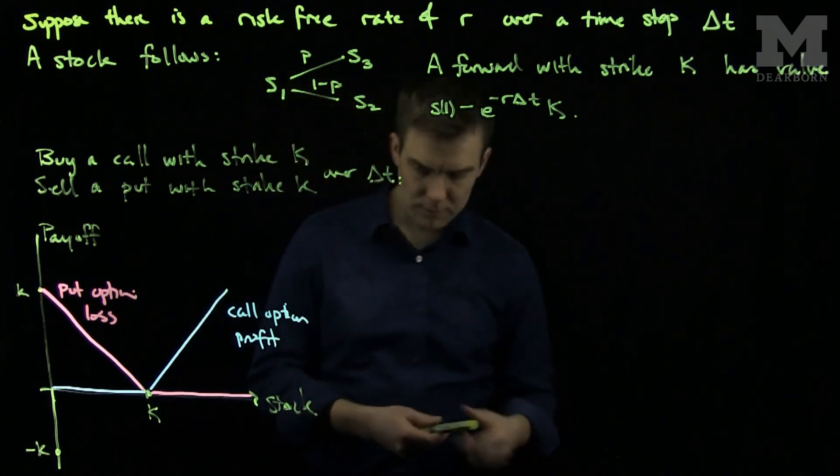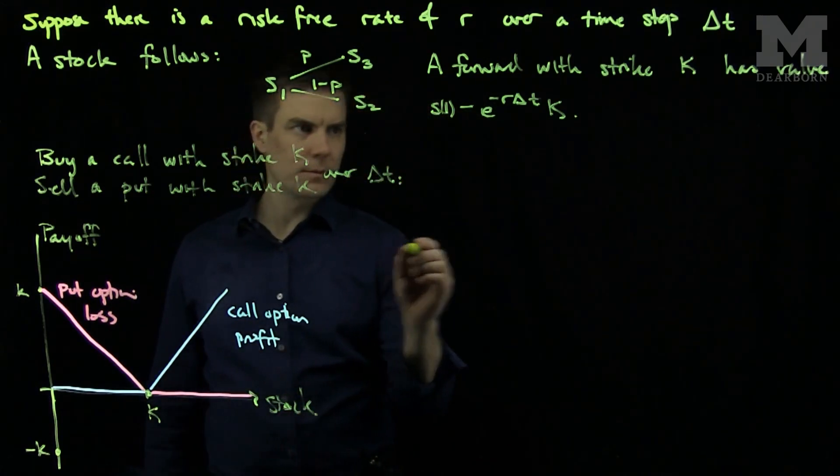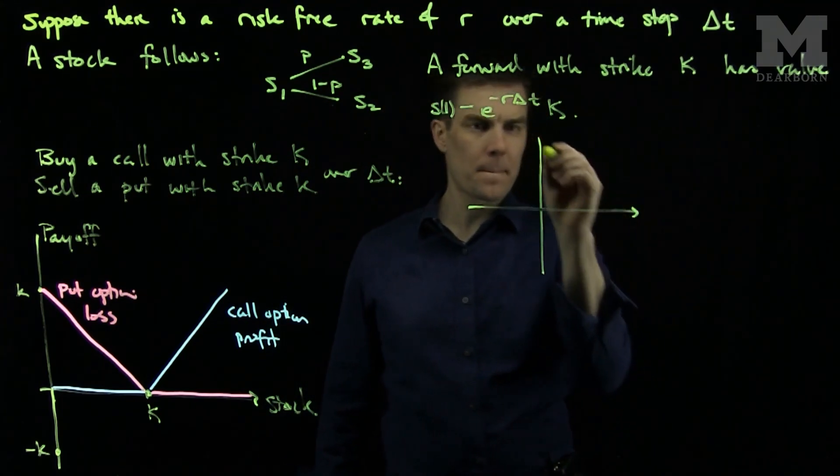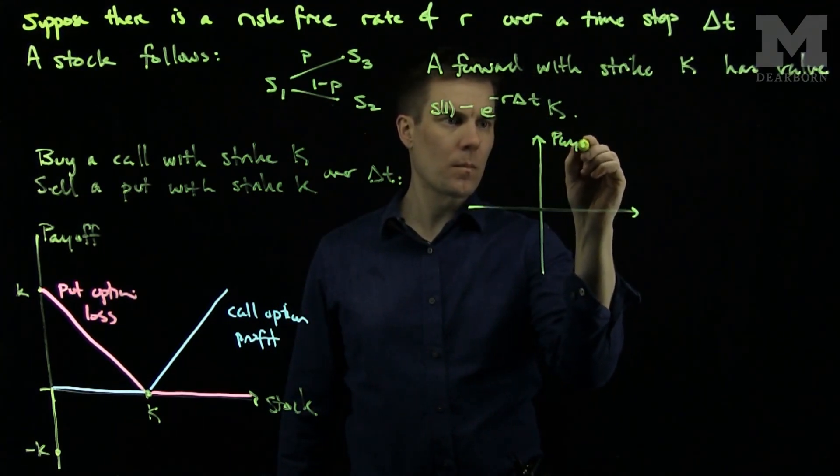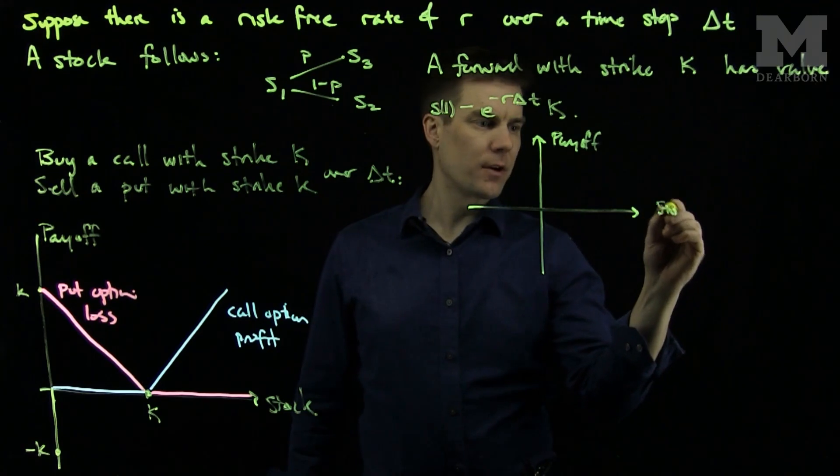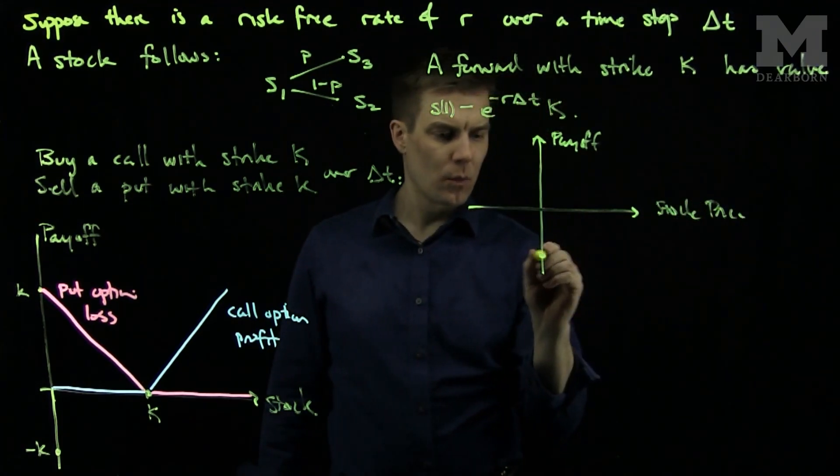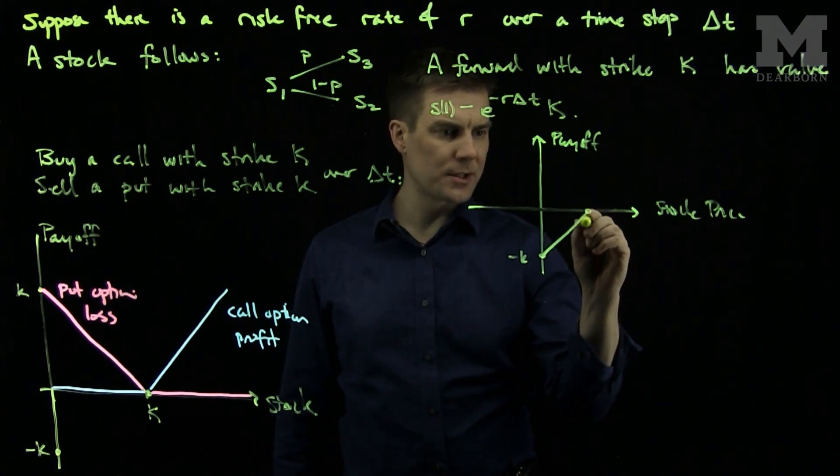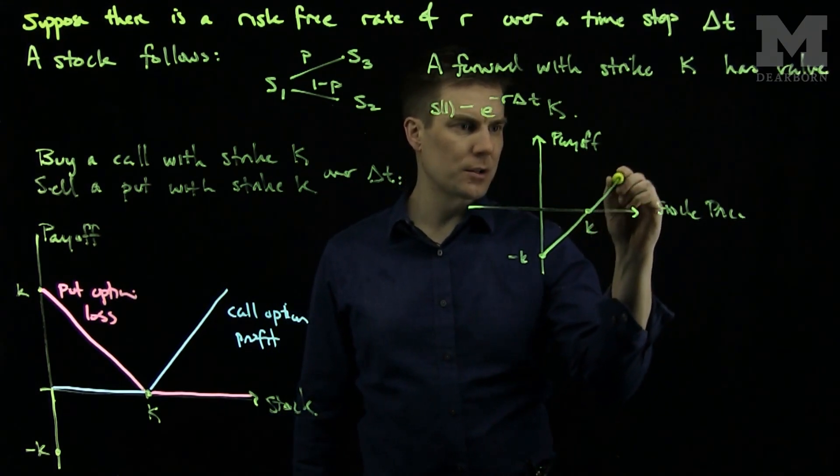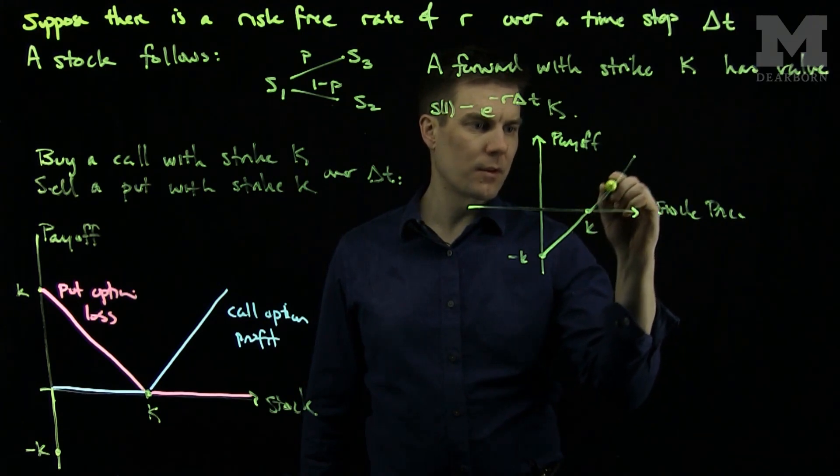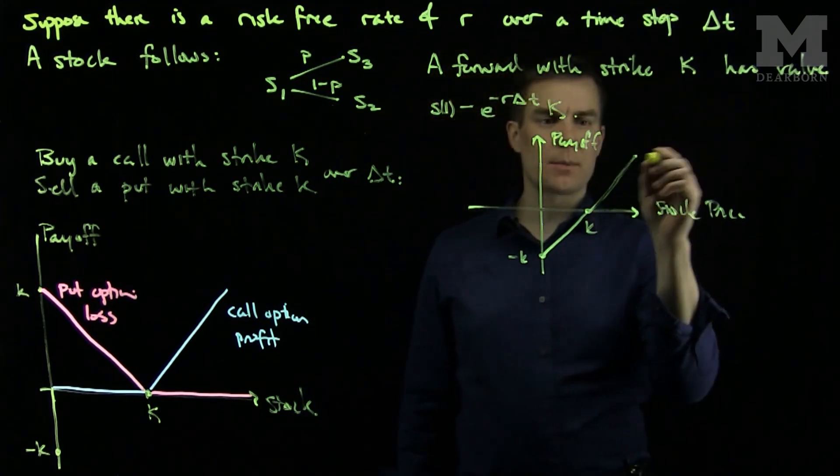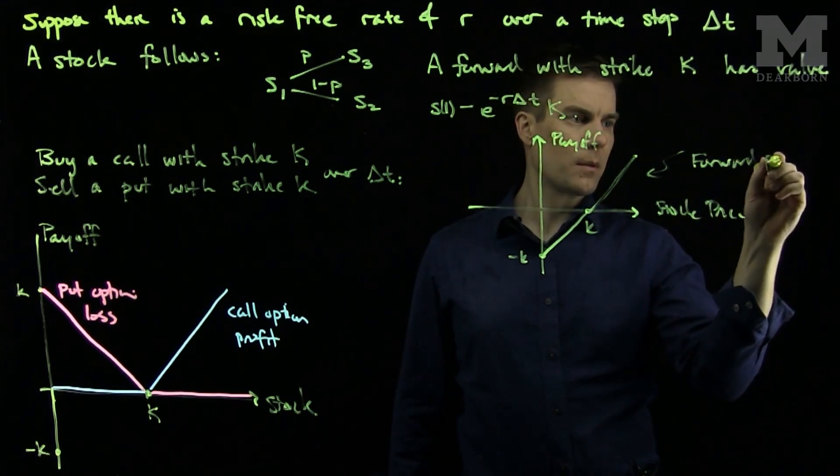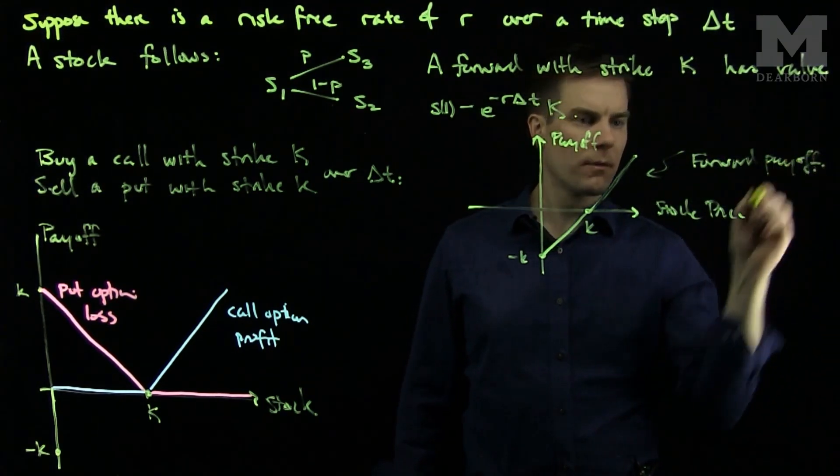So overall, our payoff as a function of the stock price will start at negative K. I will owe money up to the strike price K, and then I will start to gain forever. We see that this is the payoff for a forward.